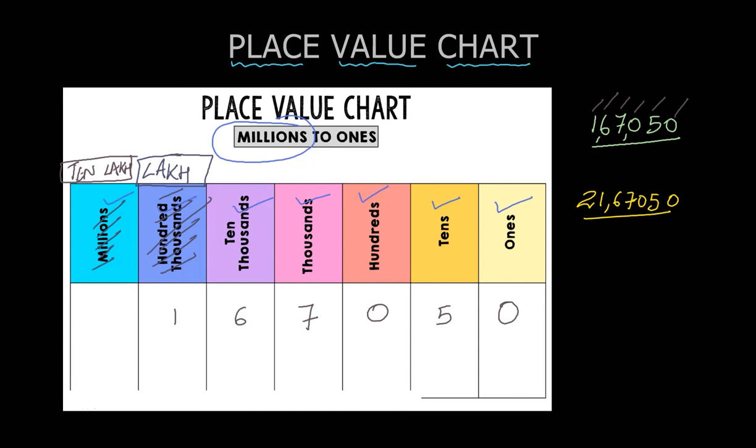So how can we write this? Let's see. Same, we will start from the ones place. We have zero over here in the ones place. Tens place we have five. Hundreds place we have zero. Thousands we have seven. Ten thousands we have six. At the lakh place we have one. And in the ten lakh place we have the two.